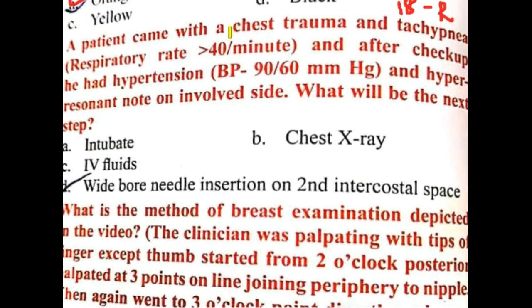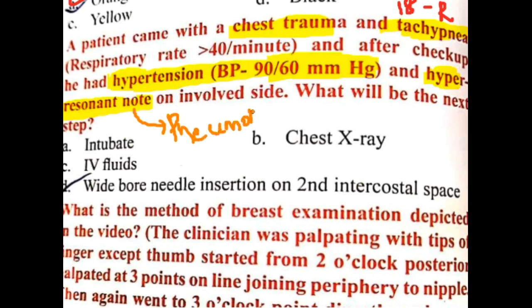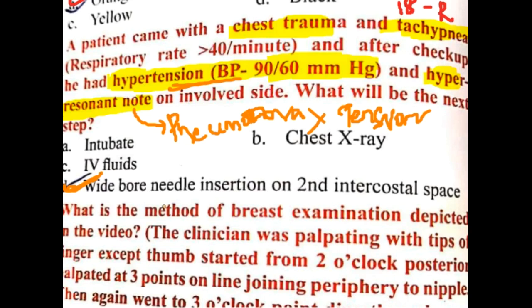A patient came with chest trauma and tachypnea, with BP of 90/60 mmHg and a hyper-resonant note on the involved side. Hyper-resonant note confirms pneumothorax, and with associated hypotension it is tension pneumothorax — an emergency. Whenever you find tension pneumothorax, you must insert a wide-bore needle into the second intercostal space.